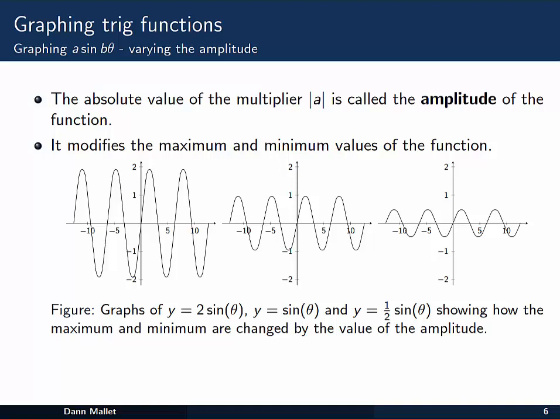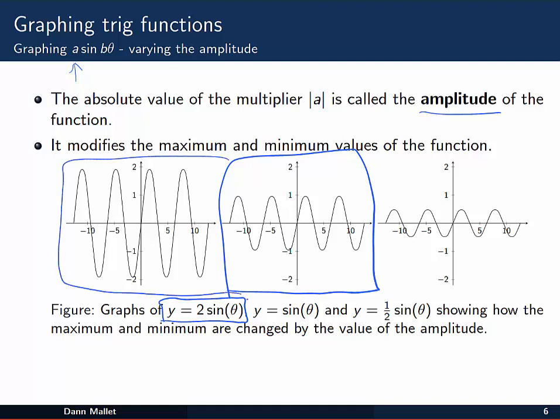The number that sits out the front of a sine b theta, that a number, its absolute value is called the amplitude of the function. It modifies the maximum and minimum values of the function. The sine curve that we drew on the previous slide looked like this. If we multiplied that sine theta by 2, 2 sine theta, we get the curve on the left here. Exactly the same shape, but it's stretched vertically so that it now goes from minus 2 to positive 2, instead of minus 1 to positive 1.